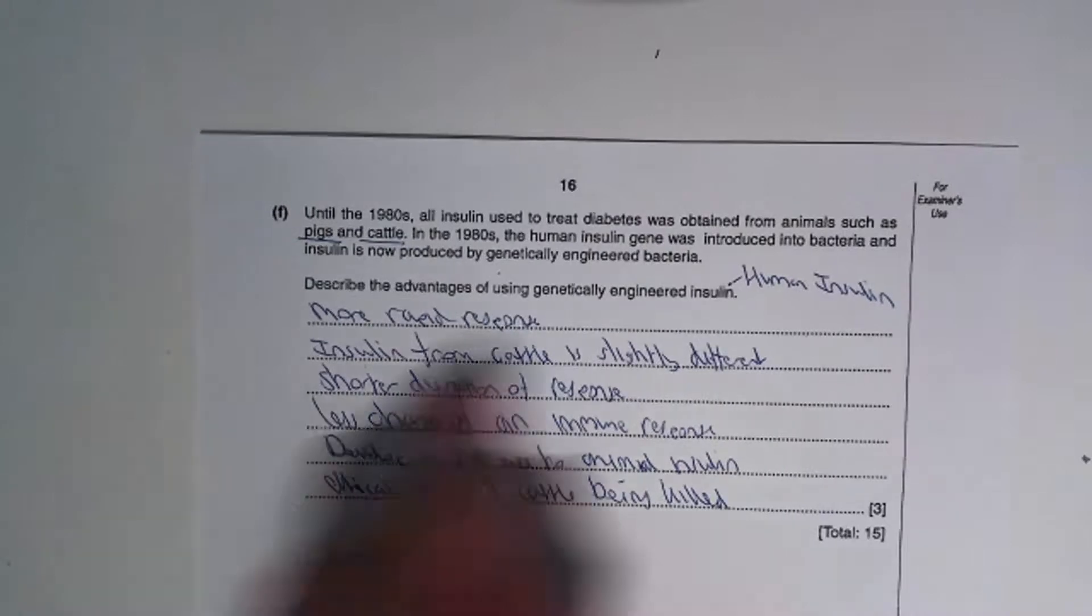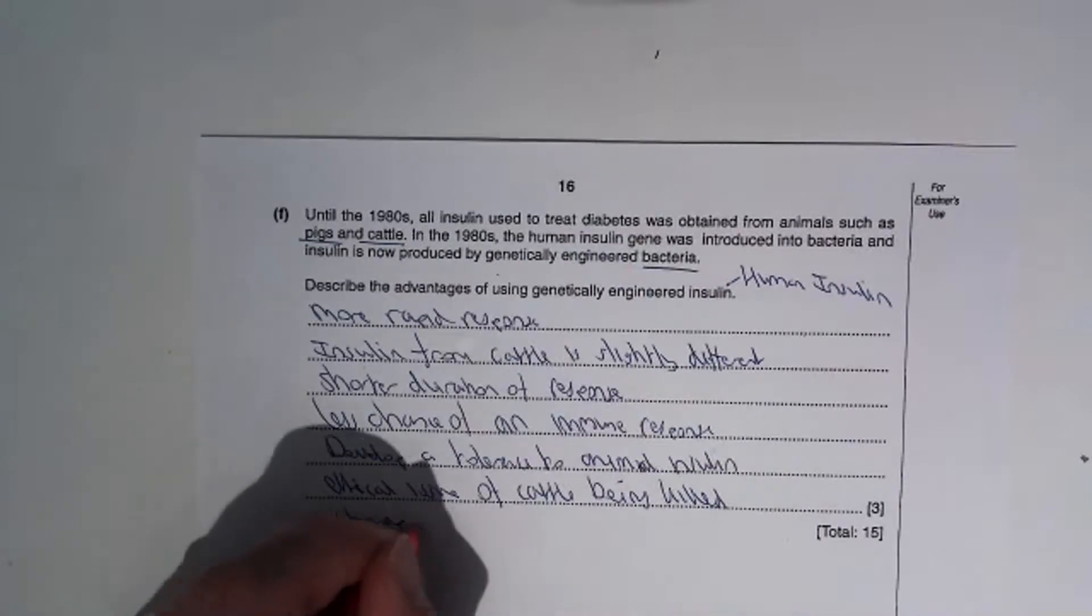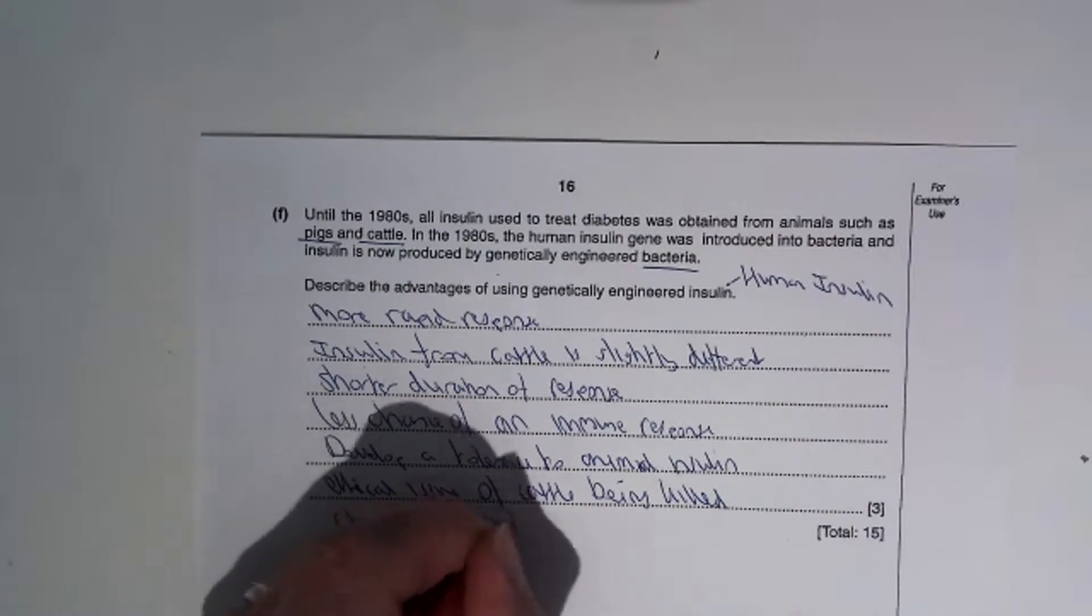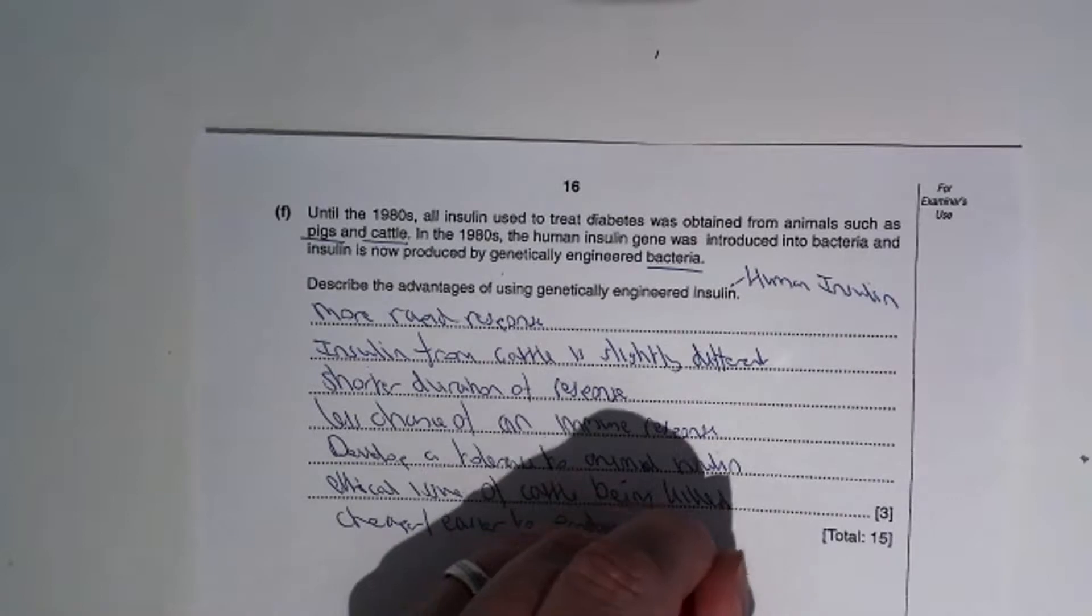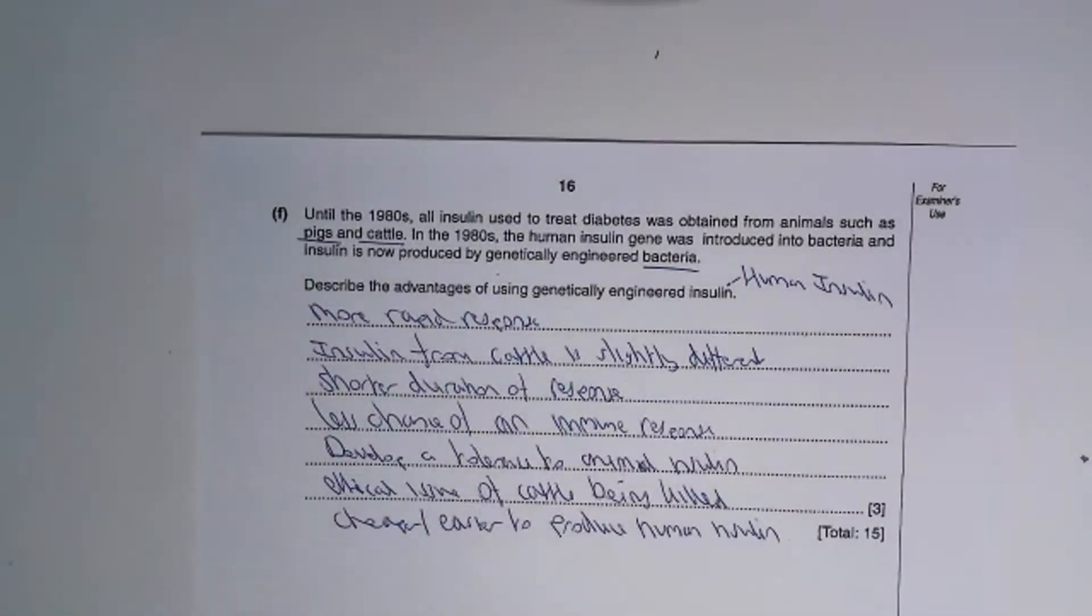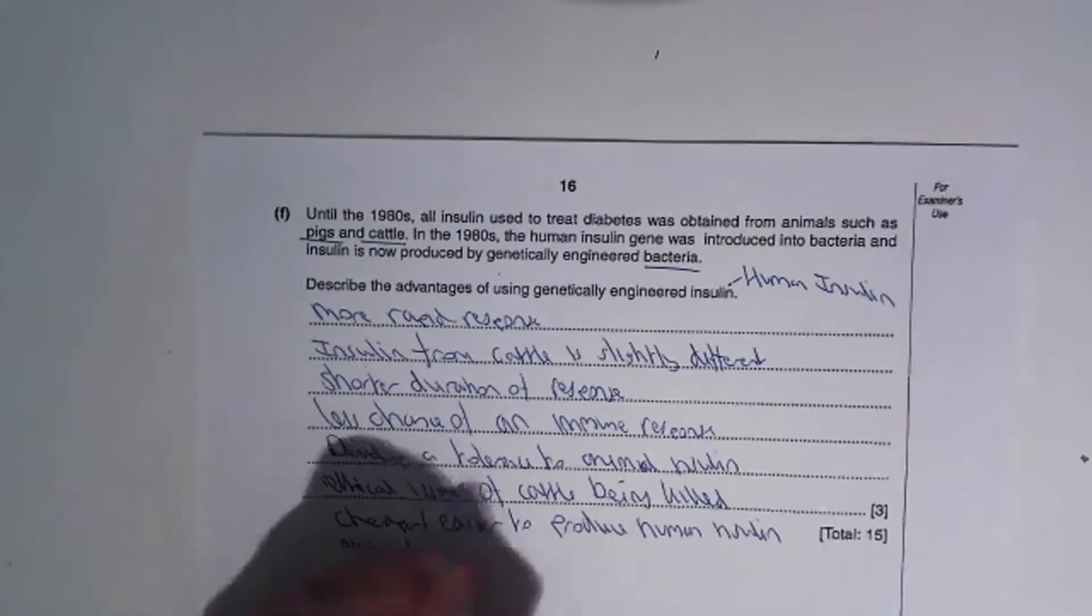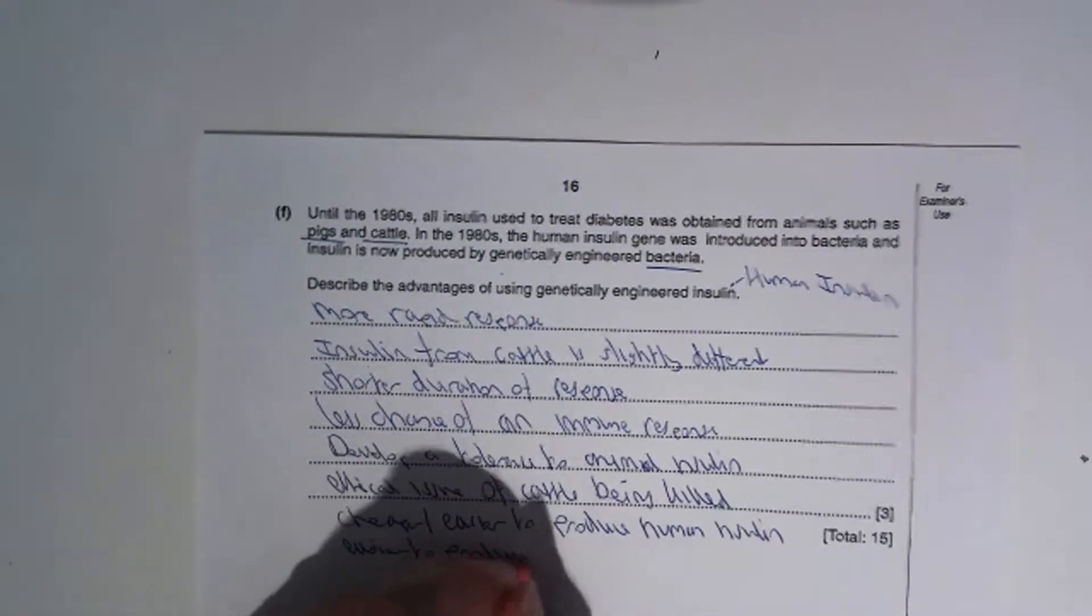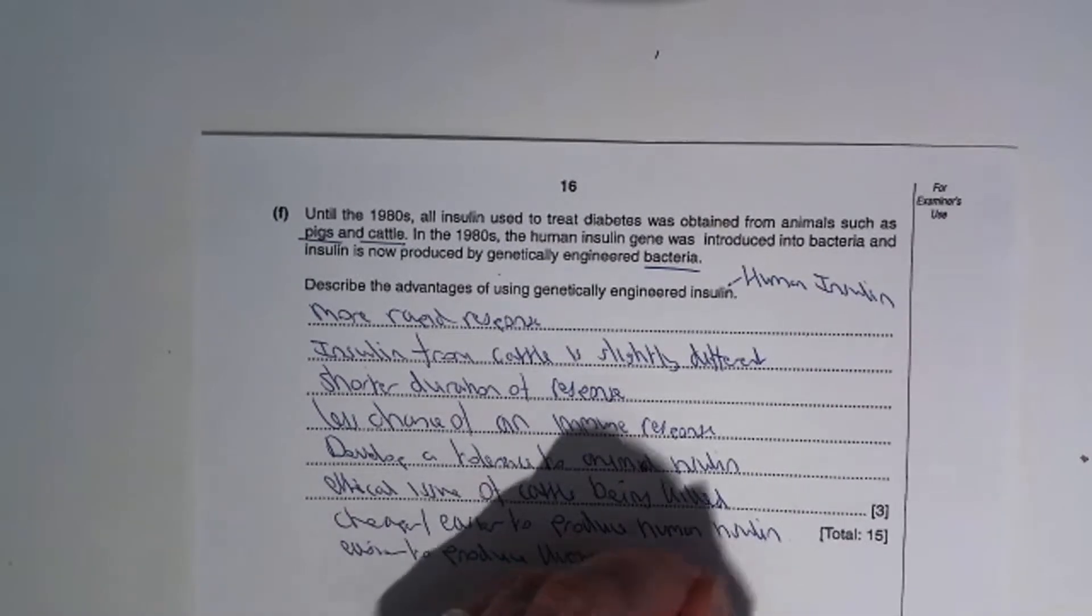Because we're using bacteria, it's cheaper and easier to produce human insulin. It's easier to produce human insulin in large amounts.